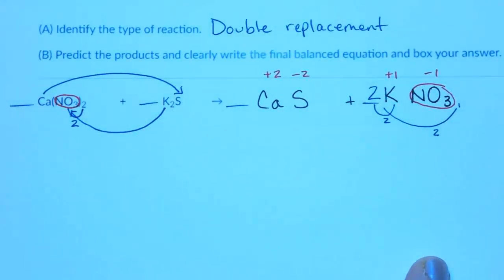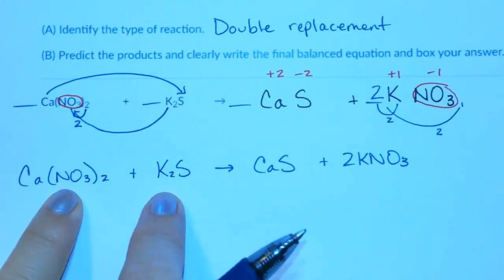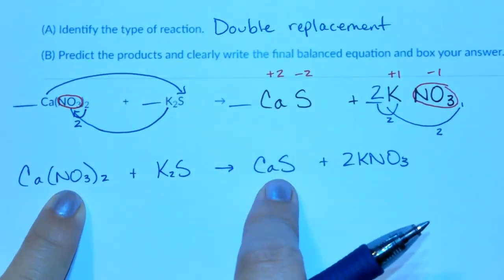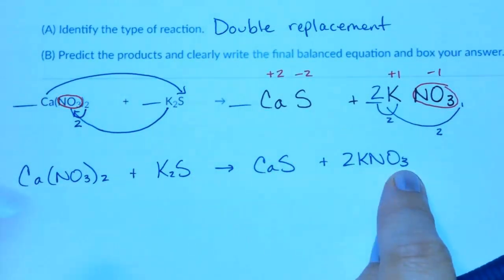Final answer is 1 calcium nitrate and 1 potassium sulfide react to form a calcium sulfide and 2 potassium nitrates.